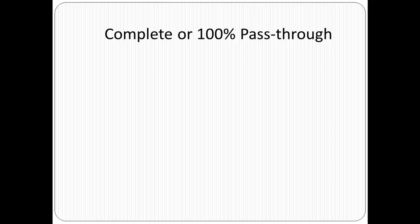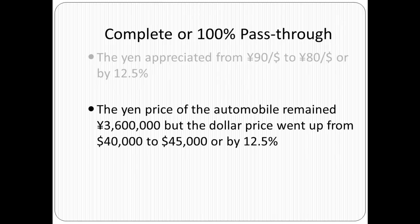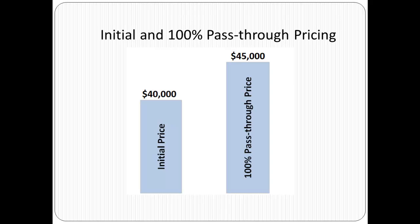The US importer now pays $45,000. In this scenario the yen appreciated from 90 yen per dollar to 80 yen per dollar, or by 12.5%. The yen price of the automobile remained the same, but the dollar price went up from $40,000 to $45,000, or by 12.5%. When the cost of an export goes up by the same amount as the exchange rate appreciation, the pass-through is 100% or complete.